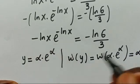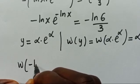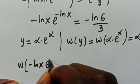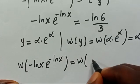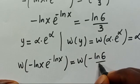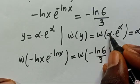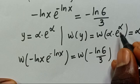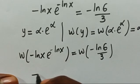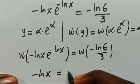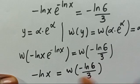Applying the Lambert W function to both sides: W of minus ln(x) times e to the power of minus ln(x) equals W of minus ln(6) divided by 3. Since the base and power on the left are the same, this simplifies to: minus ln(x) equals W of minus ln(6) divided by 3.